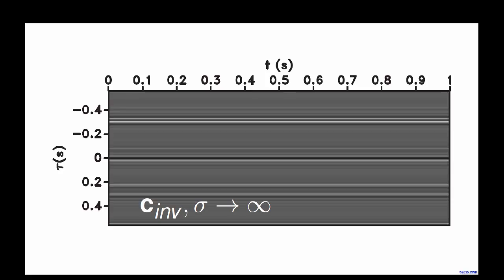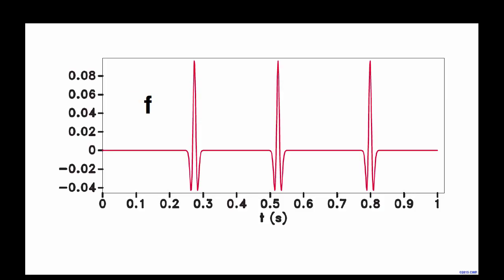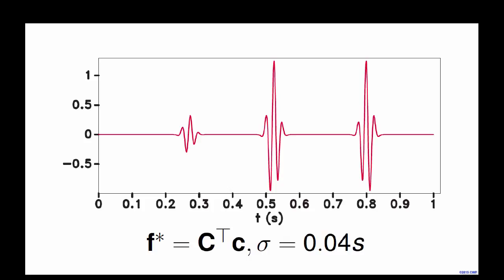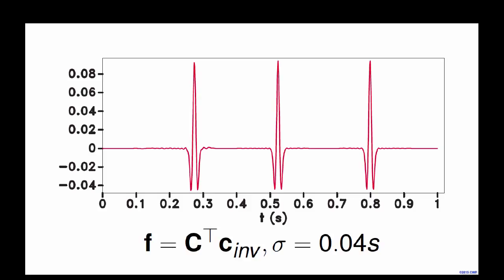However, both the local and global approaches can produce a recovered signal that best resembles the original signal f. The original signal f and the adjoint application show some amplitude differences, but kinematically the three events are at the right place. The retrieved signal through the inverse filter — both local and global — produces a good recovery of the original signal. However, the one obtained through local correlation is much simpler and easier to interpret.